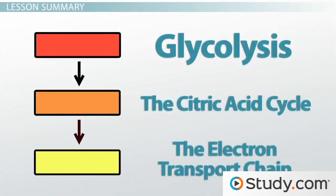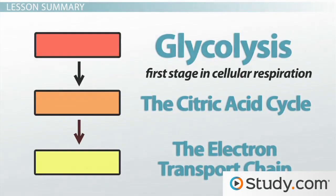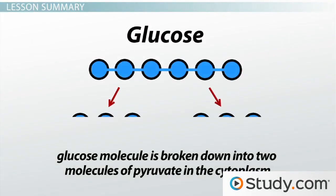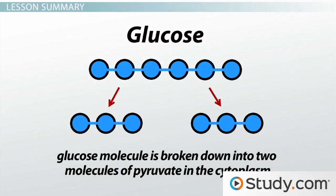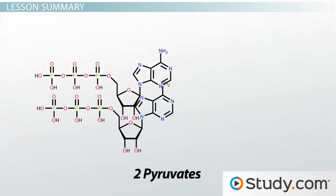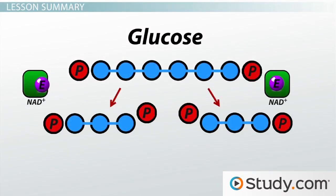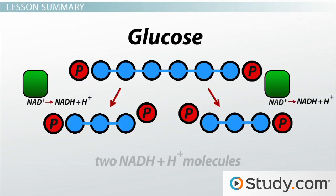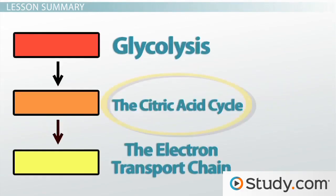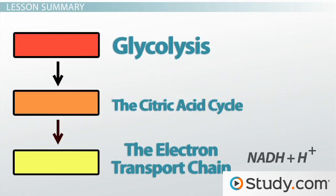Now let's tally what happens during glycolysis, the first stage in cellular respiration. One glucose molecule is broken down into two molecules of pyruvate in the cytoplasm. In the process of creating two pyruvates, two molecules of ATP are used, but four are created. Therefore, our net chemical energy from glycolysis is two molecules of ATP. Two NAD+ electron carriers collected electrons, producing two NADH molecules. The pyruvate will move on to the next part of this process, which is the citric acid cycle. The ATP, of course, is usable energy for the cell. The NADH molecules will be used later in cellular respiration during the electron transport chain to help our cells make even more ATP.